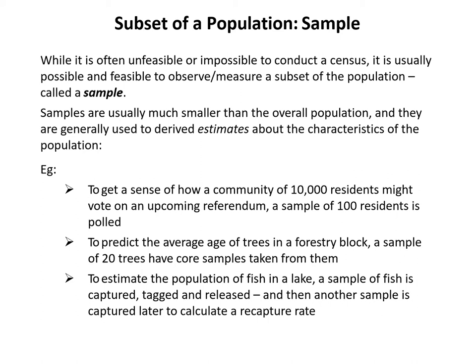For example, if you have a community of 10,000 residents and there's a referendum coming up, you might want an idea before the vote of how people feel about a question. While it might be unfeasible to survey all 10,000 residents, you might realistically conduct a sample of say 100 residents through a poll. Similarly, in a forest with hundreds of thousands or even millions of trees, you can take a smaller sample and use the information from that sample to derive an estimate for the average age.